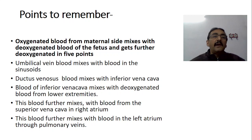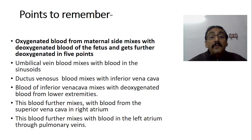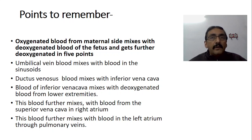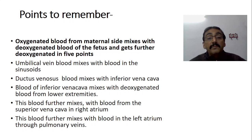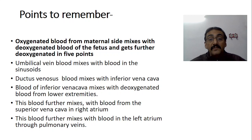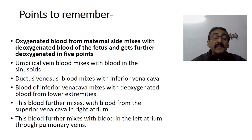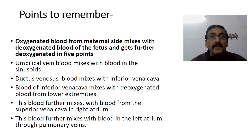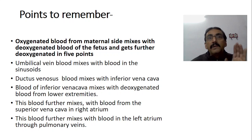There are five important points where oxygenated blood from the maternal side mixes with deoxygenated blood of the fetus, because the baby does not want highly oxygenated blood. Number one: umbilical vein blood mixes with blood in the sinusoids of the liver. Number two: ductus venosus blood mixes directly with the inferior vena cava. Number three: blood of the inferior vena cava mixes with deoxygenated blood from the lower extremities. Number four: blood further mixes with blood from the superior vena cava in the right atrium. Number five: this blood further mixes with blood coming to the left atrium through the pulmonary veins from the lungs.